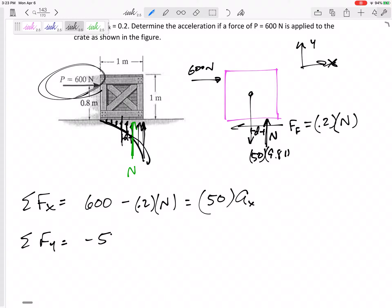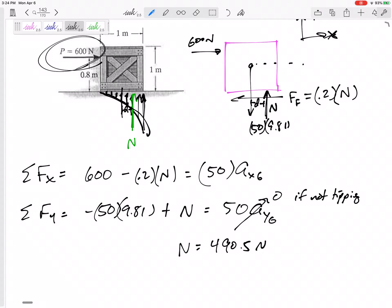Let me sum the forces in y. Negative 50 times 9.81. Positive n equals, now don't write equals zero too soon, but it equals m a. What is this acceleration in the y direction? This is of point g. If I'm assuming it's not tipping, then this is zero, if not tipping over. All right. So my n would be 490.5. I'll plug that back in up there. My acceleration would be 10 meters per second squared.